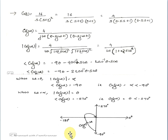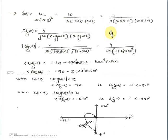Next, consider G(s). G(s) is given as 16 by [s into (s+2)²]. Converting to standard form: G(s) equals 4 by [s into (0.5s+1) into (0.5s+1)].